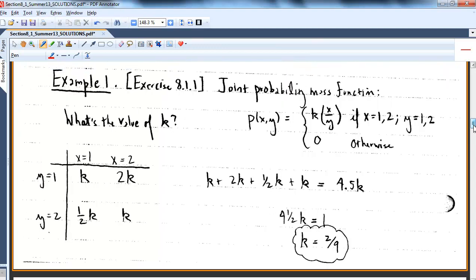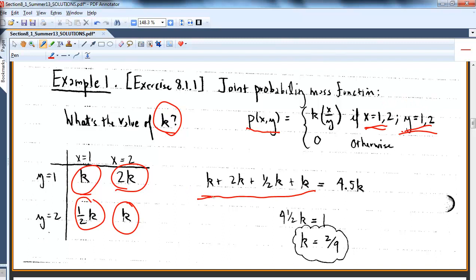Let's do a nice example from the textbook. Here's a joint probability mass function: P of X, Y is defined by K times X over Y for X equals 1, 2, Y equals 1, 2. Otherwise the distribution is 0. I'm trying to find the value of K. K has to take on a value such that when I sum over my X's and Y's, this mass function sums to 1. I'm making a little table. When X is 1 and Y is 1, this is K. When X is 2 and Y is 1, this is 2K. X 1, Y 2 is half K. And 2, 2 is K. When I sum over all my possibilities, which is 4.5K, K is going to have to be 2 ninths.